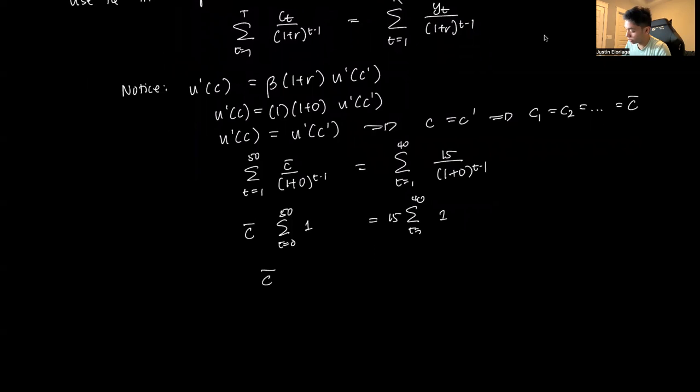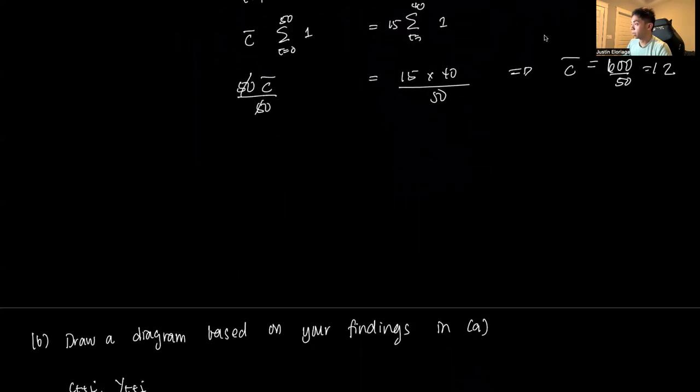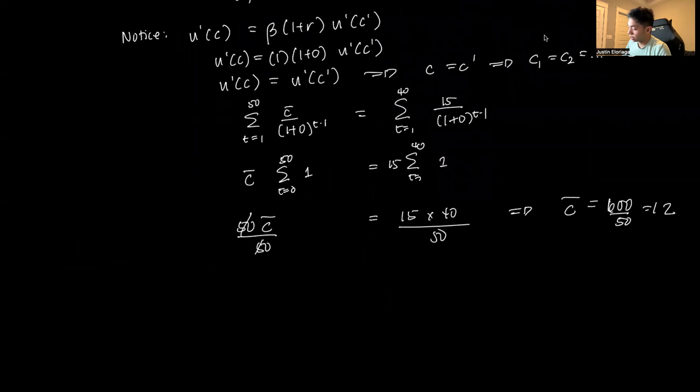This equals 15 times 40. Clearly 50 times C-bar equals 15 times 40, which is 600. Dividing both sides by 50, we get C-bar equals 600/50, which is 12. This is the C-bar that we find.